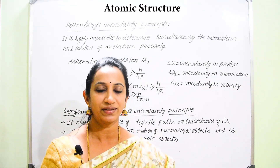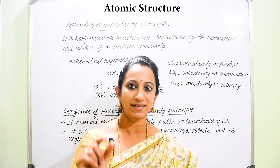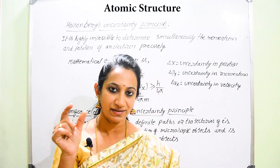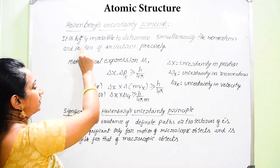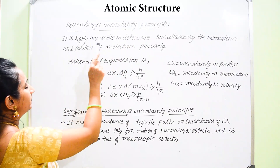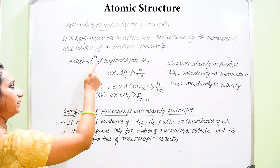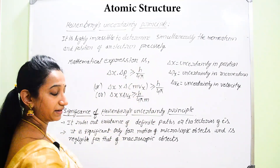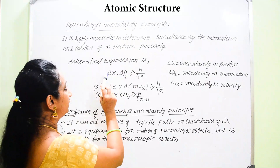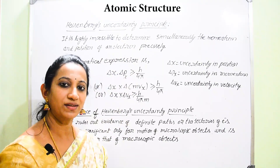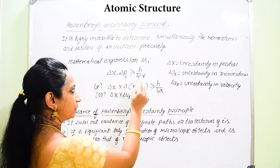Momentum is nothing but the product of mass and velocity. The electron has a certain specific mass. According to Heisenberg's uncertainty principle, it is highly impossible to simultaneously determine the momentum and position of an electron precisely. They have also given one mathematical expression: delta x multiplied by delta px is greater than or equal to h by 4 pi. This expression is very important from an examination point of view.